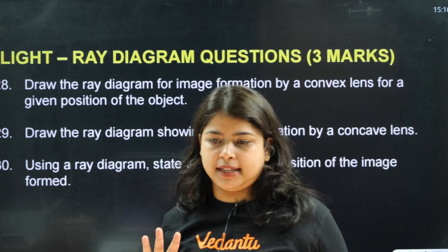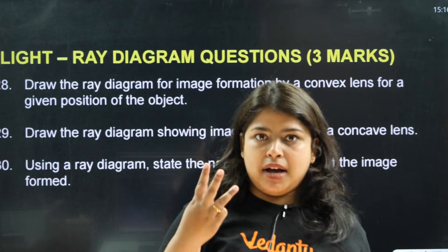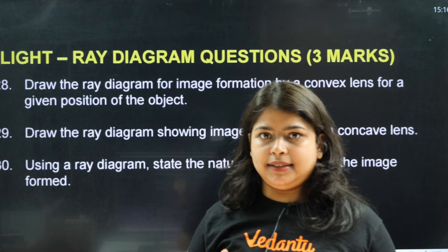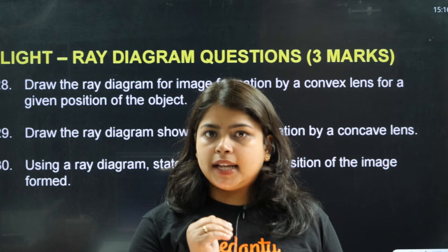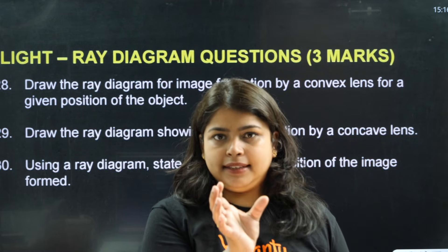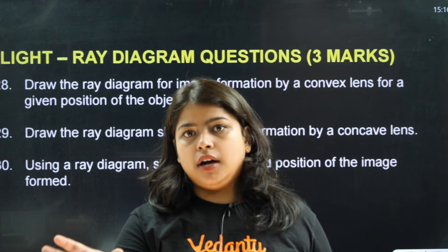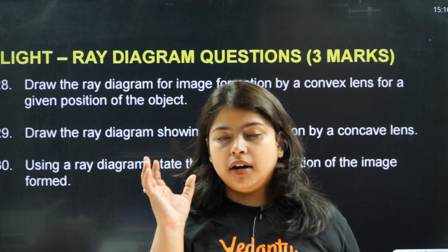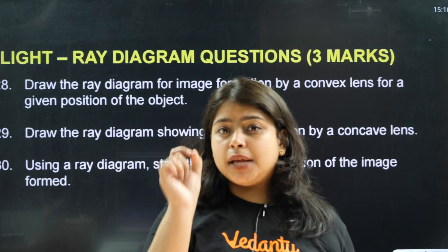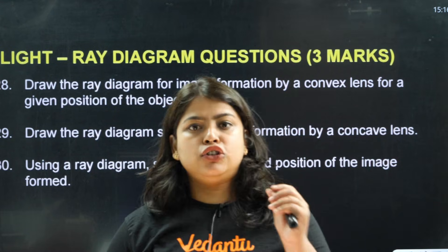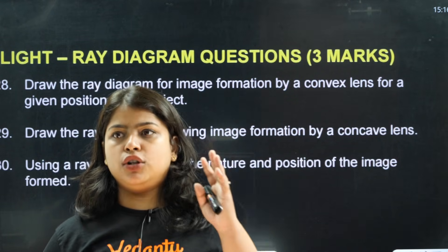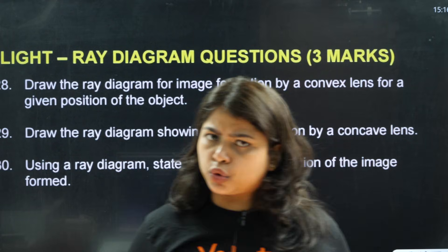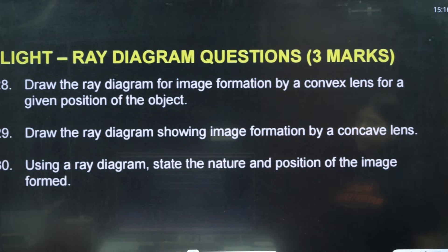Next: Light ray diagram questions. These are typically three-mark questions. Sometimes they will give you a diagram with options A, B, C, D and ask where the image is formed. Sometimes they ask whether the image is real or virtual, erect or inverted. Practice these from the model question papers — there is already one such question in the model paper, so solve it for practice.